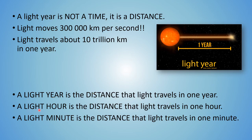For shorter distances in space, we can use light hours. A light hour is the distance that light travels in one hour. And a light minute is the distance that light travels in one minute.